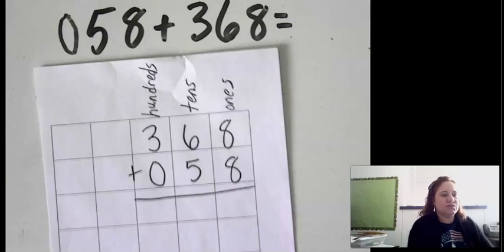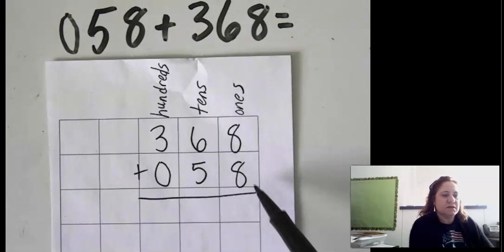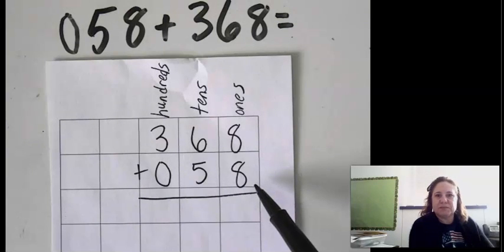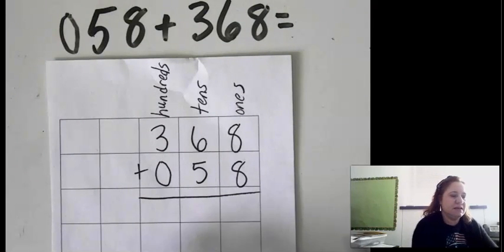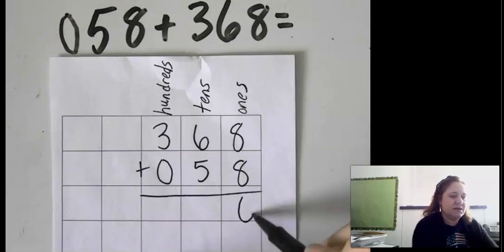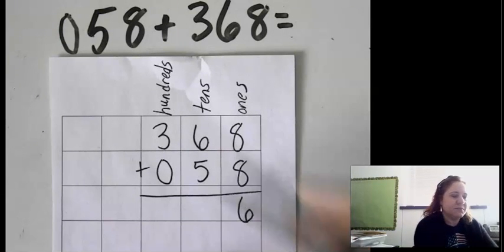So we are going to start on the right always and work our way to the left. We have 8 plus 8, or 8 times 2. Okay, that's 16. I'm going to put the 6 here, but I cannot put the 1 here. I have to put the 1 on top.